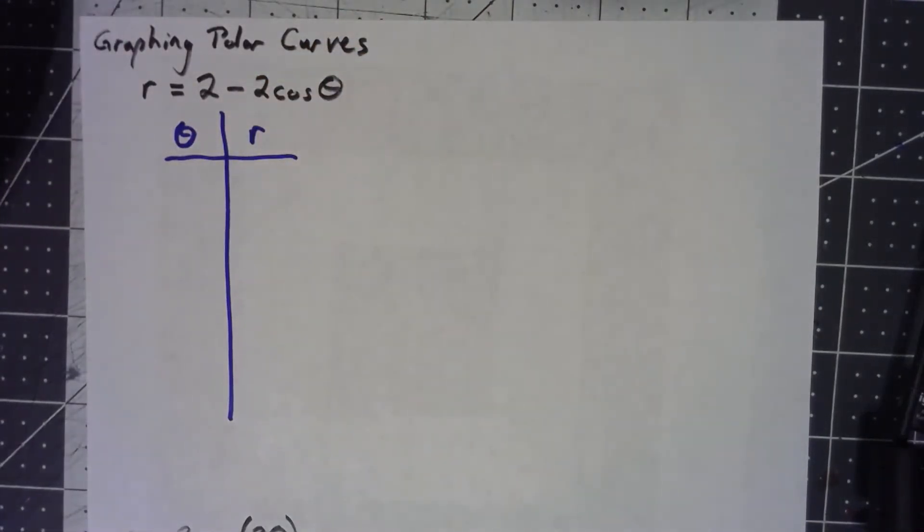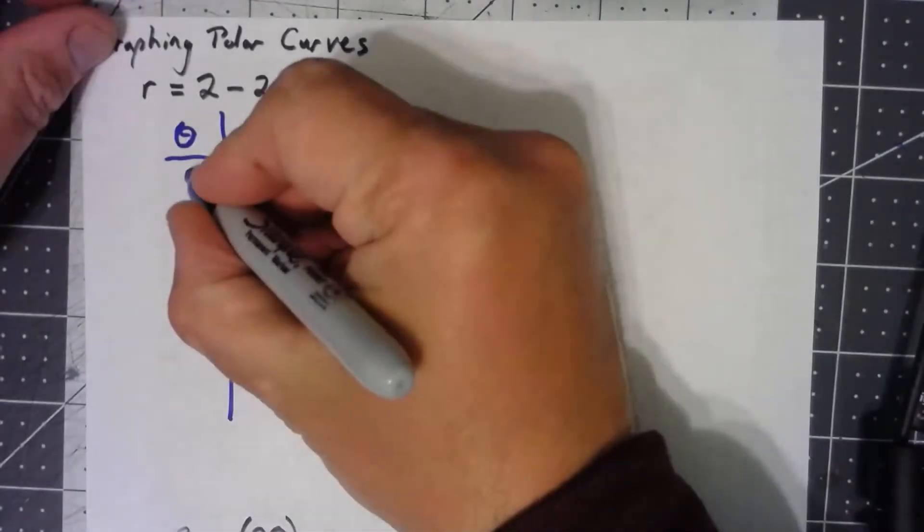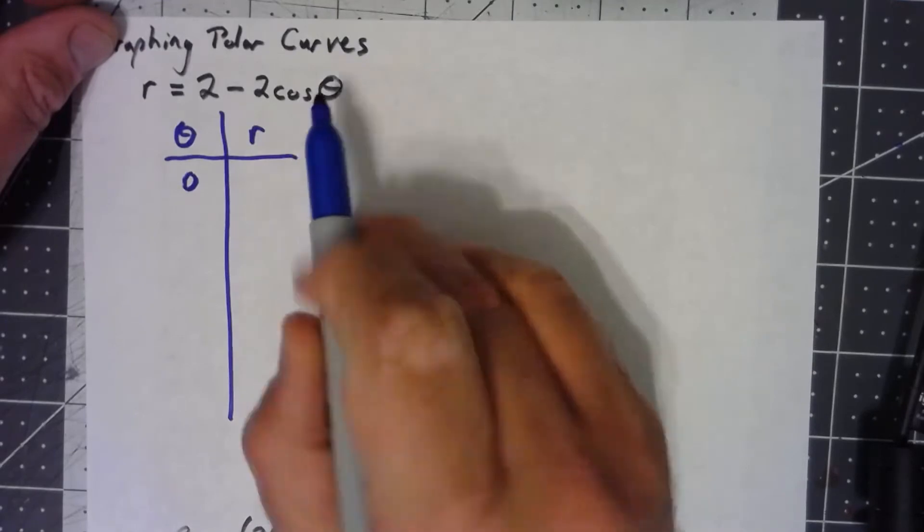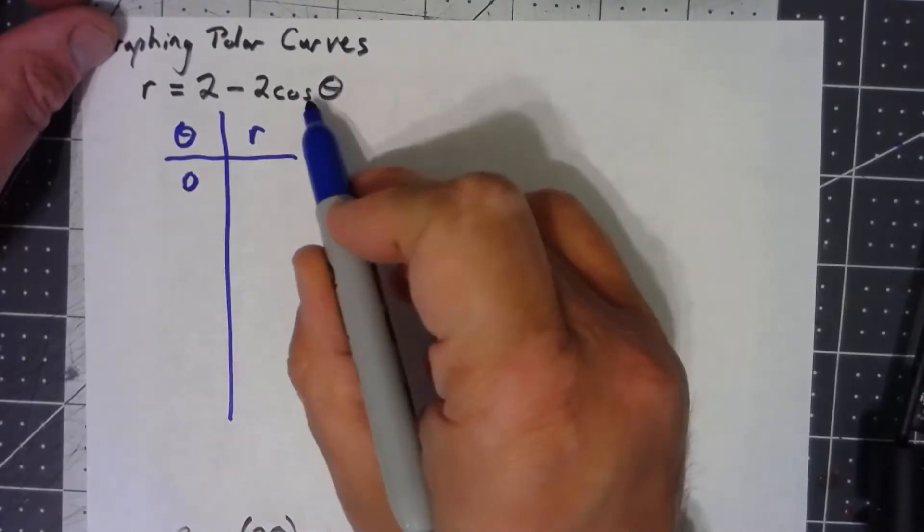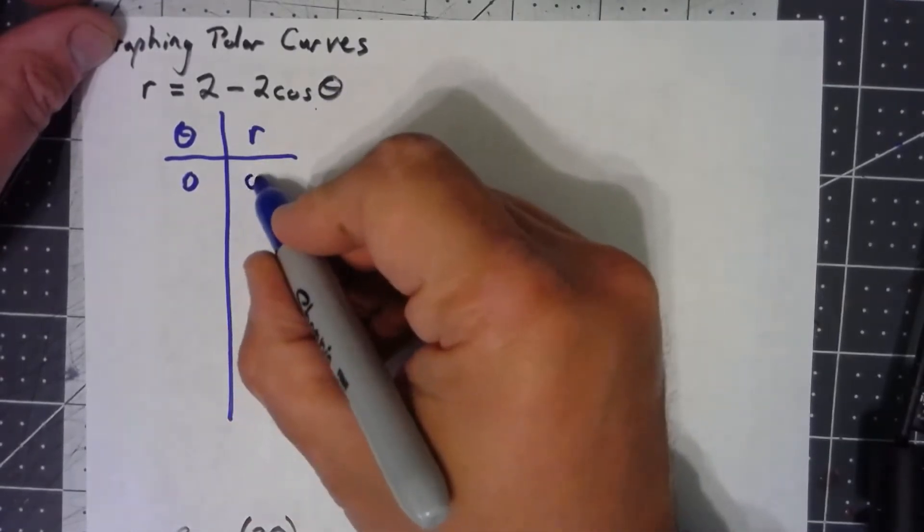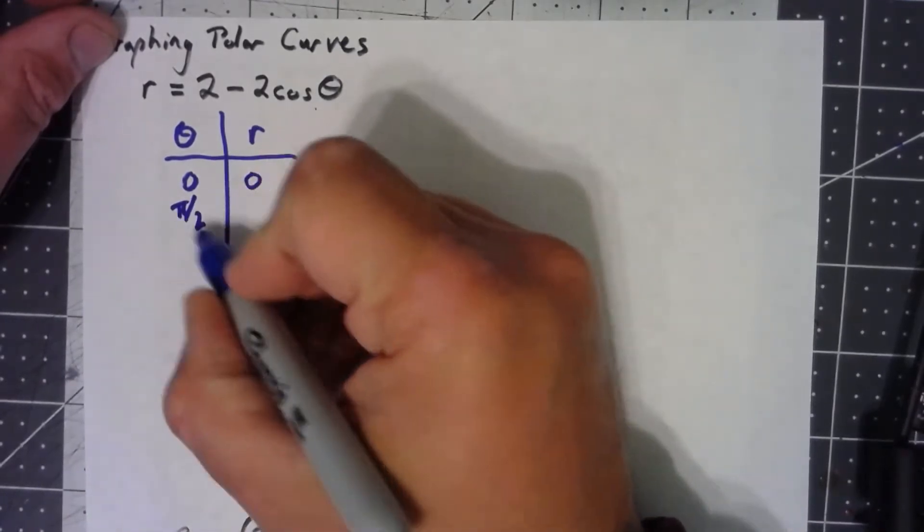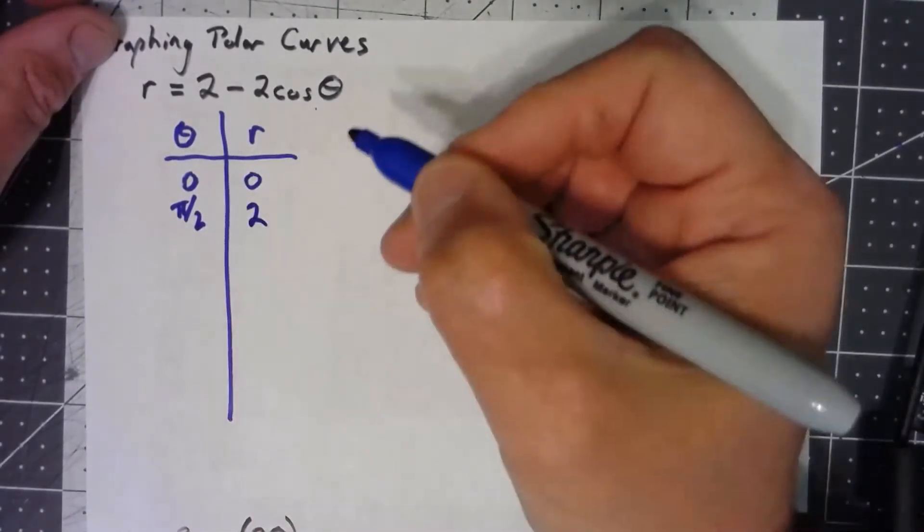I always like to start with my quadrantal angles. So if theta is equal to 0, we get 2 minus 2 times 1 because cosine of 0 is 1, so we get a radius of 0. At pi over 2, cosine of pi over 2 is 0, so this is 2.